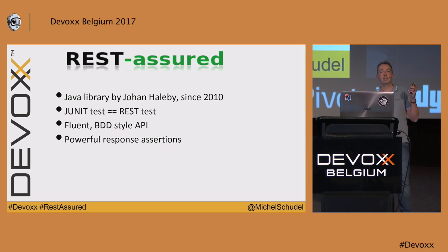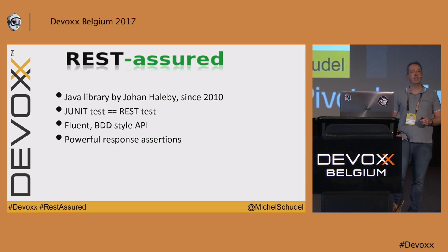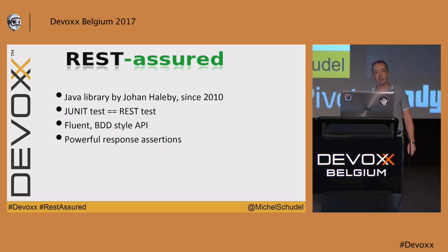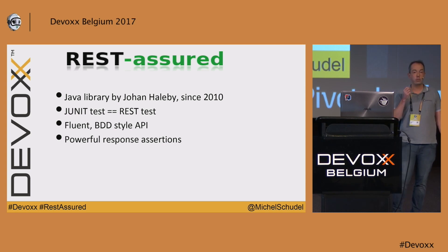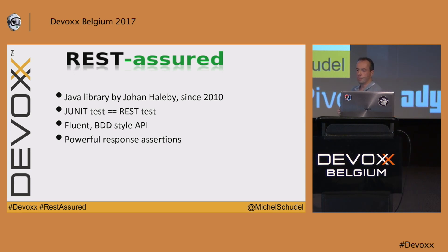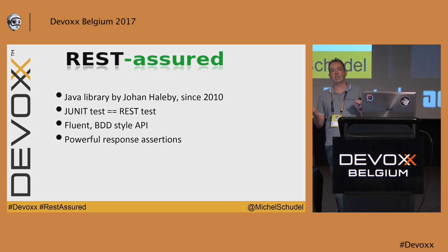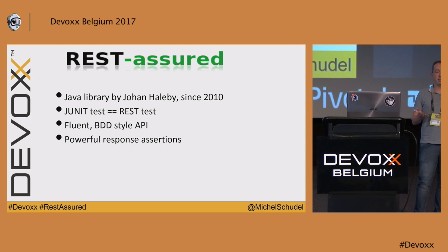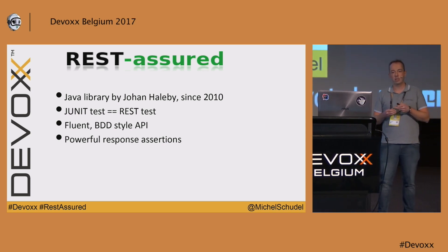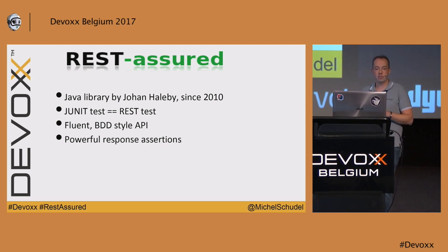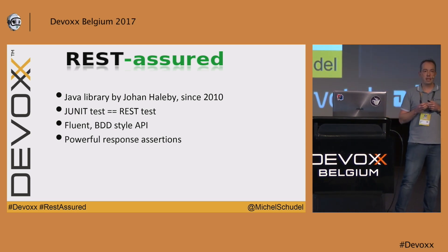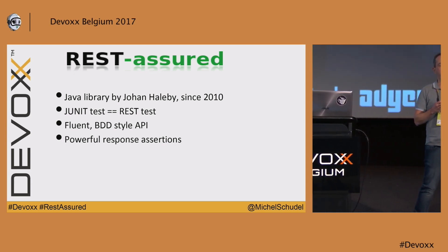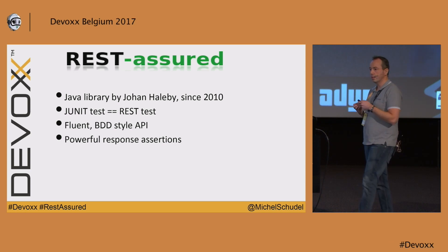So then we encountered REST Assured — anyone already working with it? A few of you. I hope I can tell you something new today. This is a Java library created by Johan Hallaby, and it's been around since 2010. The beauty of it is you can just write REST tests as unit tests. This fits really well with your build pipeline — something like a unit test that Jenkins handles well out of the box. And it has a very nice BDD-style fluent API.